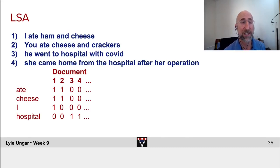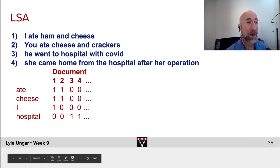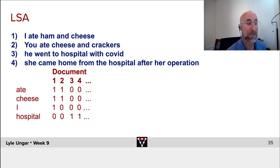Here's a trivial LSA example. Four documents. First document is I ate ham and cheese. Second document, you ate cheese and crackers, and so forth. You see a matrix here. Each row is a word for every single word in my vocabulary.